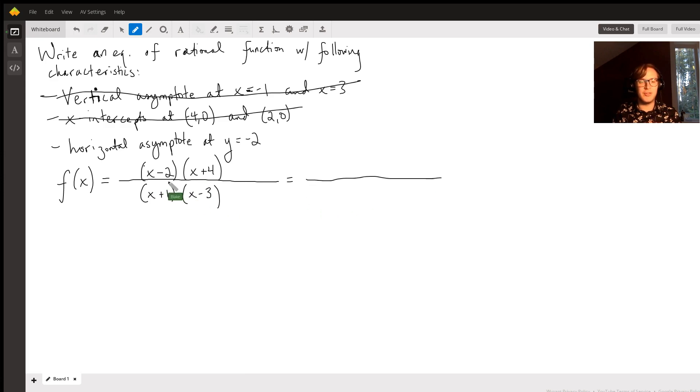And they both have a leading coefficient of 1, because if we were to actually simplify what we have so far, this is actually equal to, if we FOIL this out, x squared plus 4x minus 2x, which is 2x. And then negative 2 times 4, which is negative 8, and then on the bottom, we get x squared minus 3x plus x, which is minus 2x, 1 times 3 is negative 3.